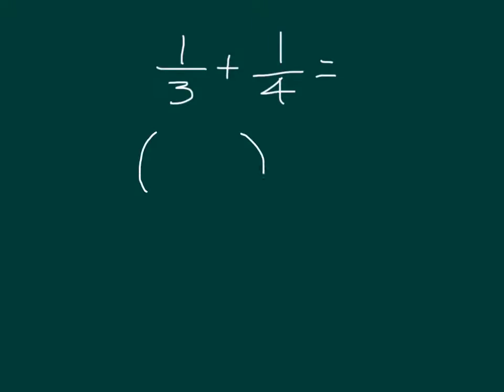So we had 1 third. And what we'll do is we'll multiply by the other denominator of 4. And with 1 fourth, we'll multiply by the other denominator of 3. And remember, we're adding these.